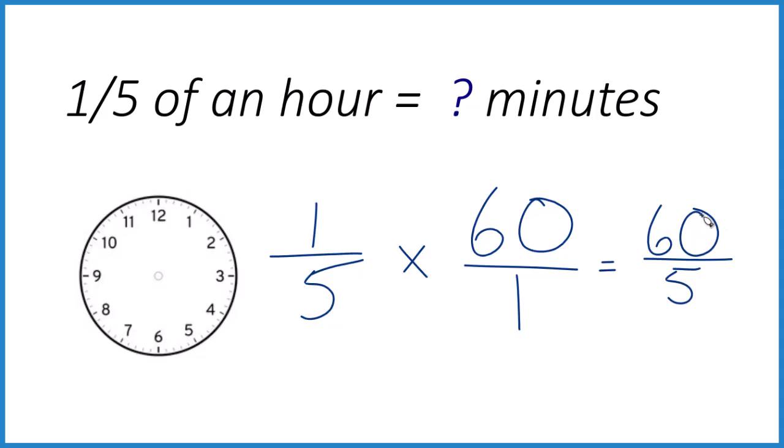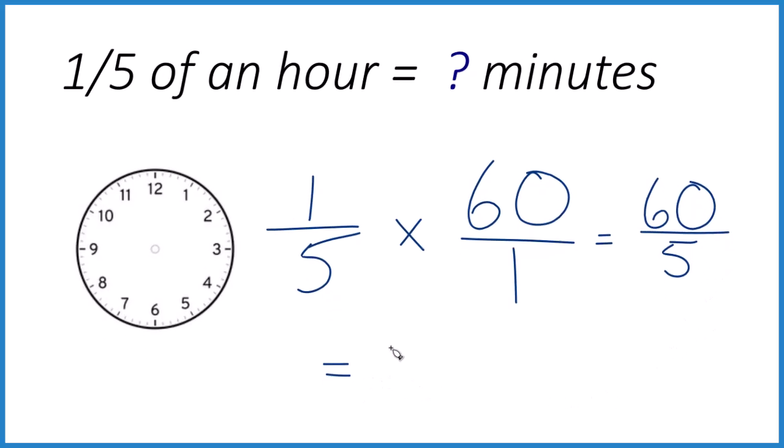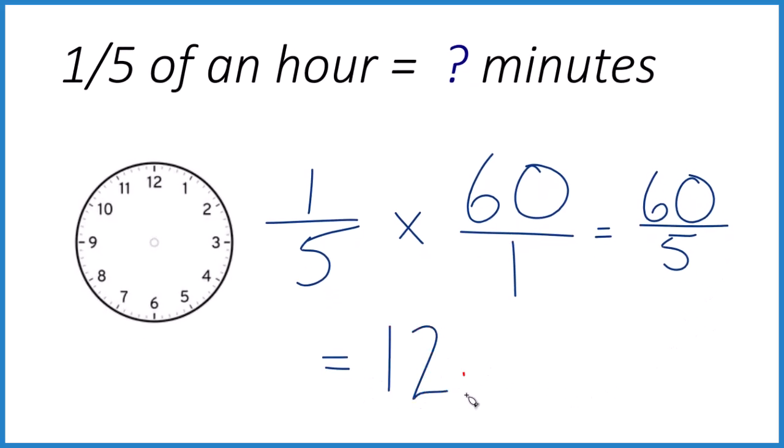And now I can divide 60 by 5. You can do it on a calculator or longhand, or you might know that 60 divided by 5 equals 12. That's 12 minutes.